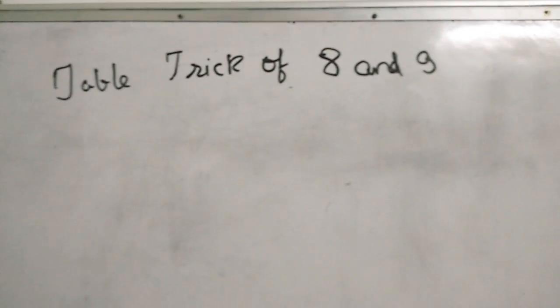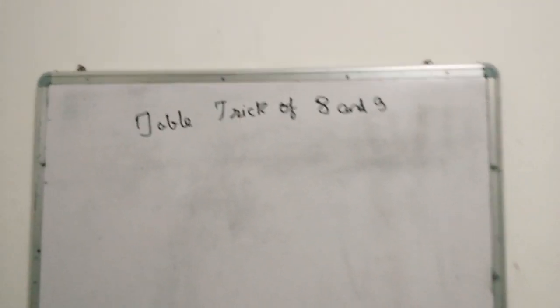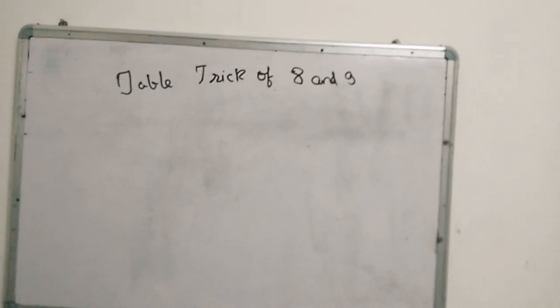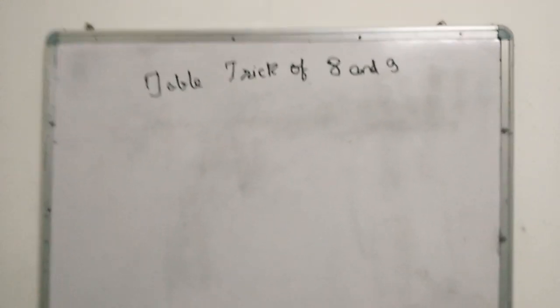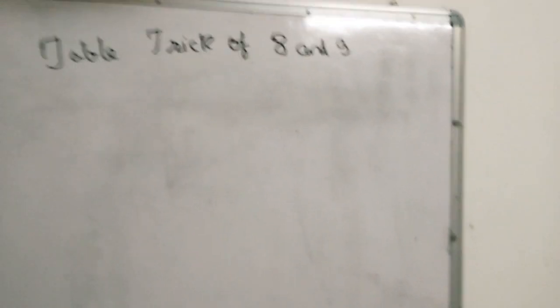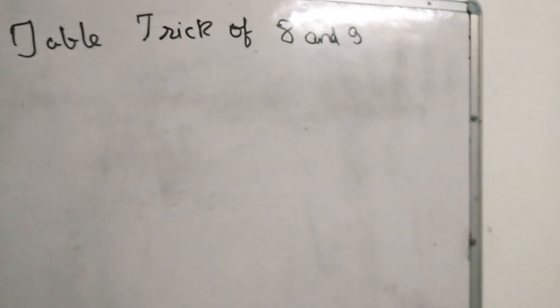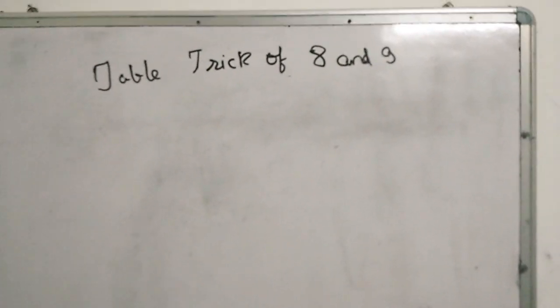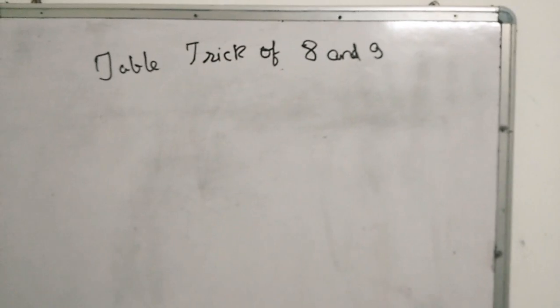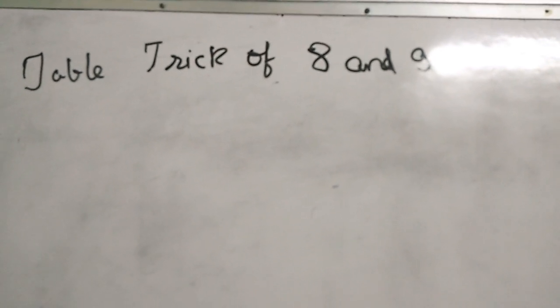Welcome to my channel. Today I will tell you about the table trick of eight and nine. The table of eight — first I'll tell you about the multiplications and divisions. If you don't learn the tables, you cannot identify the answers of multiplication and division. I know that two to seven tables you know very easily, as they are very easy. Now eight and nine are a little difficult, but I will show you the trick easily.